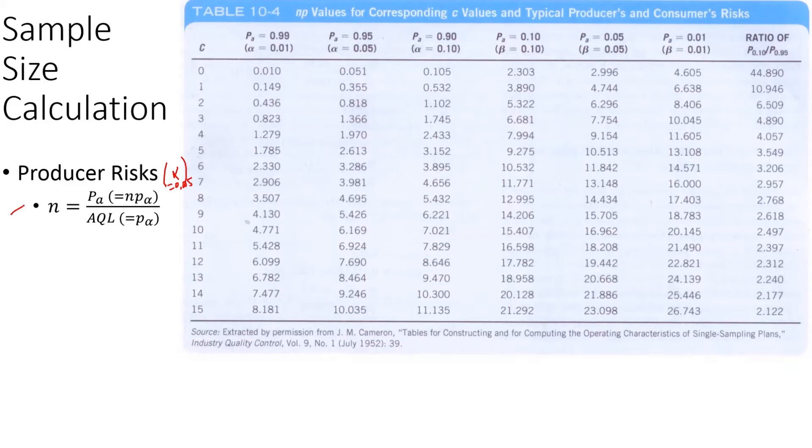Now this is the formula to calculate the sample size. This probability of acceptance or NP value, as you have seen before in the operating characteristics curve creation, this NP is the average number of defectives. Now that comes from this table.